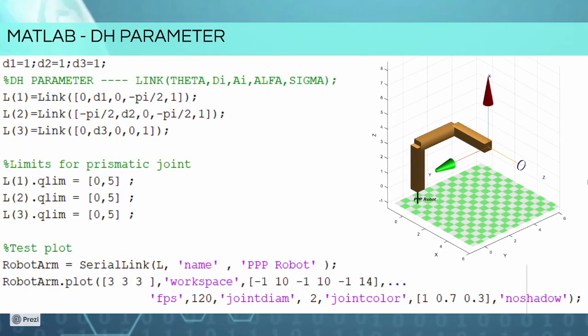Under MATLAB, we can implement the DH parameter using the command link, which can define theta, di, ai, alpha, and sigma, which can be 1 or 0 according to the type of joint, 1 for prismatic and 0 for revolute. We then made a test plot using the command plot of the class SerialLink to have a practical representation.